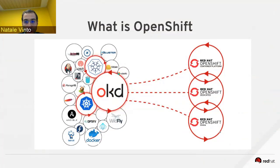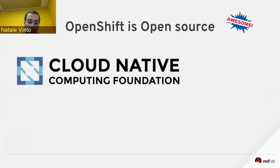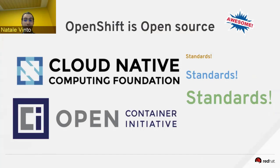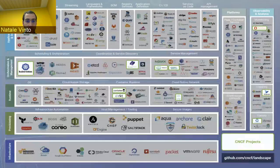OpenShift is a community — a group of open source projects where the major project is Kubernetes, of course, and OKD, which is our upstream version of OpenShift Container Platform. Around this there is an ecosystem of many open source projects that contribute to the OpenShift ecosystem. It's awesome because it's open source and built on standards — the Cloud Native Computing Foundation, the Open Container Initiative, and the Linux Foundation.